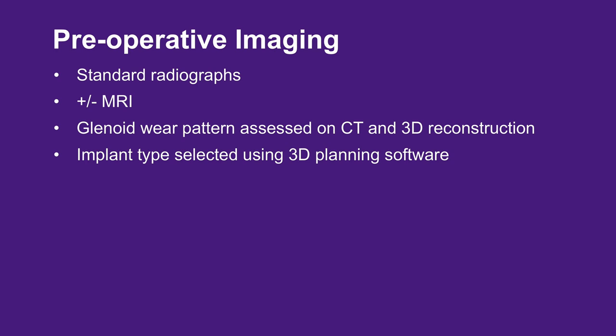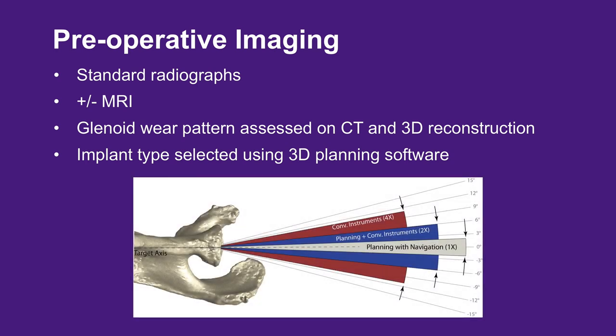The glenoid wear pattern is assessed most clearly with the CT scan and appropriate 3D reconstructions. Using preoperative 3D navigation software, the appropriate glenoid implant type is selected and accurate position can be determined. In addition to controlling version and inclination of the component, the planning decreases the risk of perforation of the glenoid vault that would lead to perforating cement and or glenoid pegs.